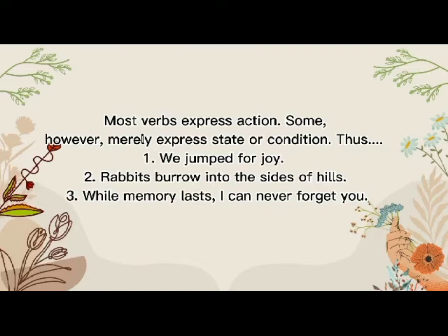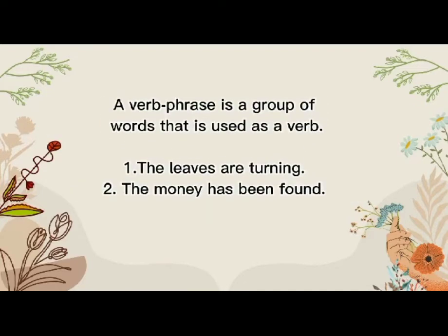Number two: 'Rabbits burrow into the sides of hills.' The verb is 'burrow.' Number three: 'While memory lasts, I can never forget it.' The verb is 'memory' because it is a state of condition. A verb phrase is a group of words that is used as a verb — helping verbs plus main verbs equals a verb phrase. For example: 'The leaves are turning' — the helping verb is 'are' and the main verb is 'turning.' Another example: 'The money has been found' — the helping verb is 'has been' and the main verb is 'found.'